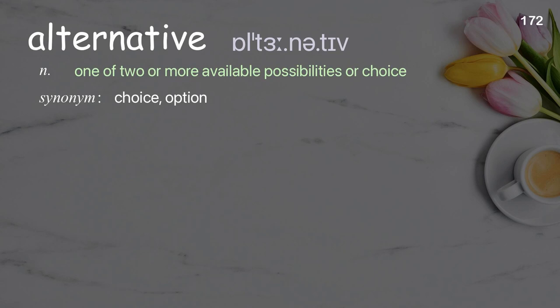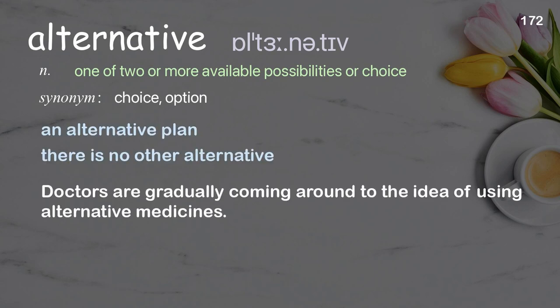Alternative: one of two or more available possibilities or choices. Examples: An alternative plan. There is no other alternative. Doctors are gradually coming around to the idea of using alternative medicines.